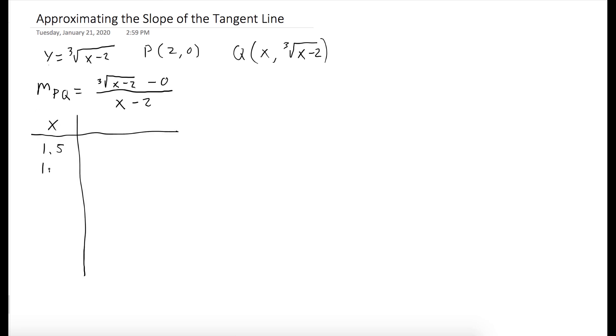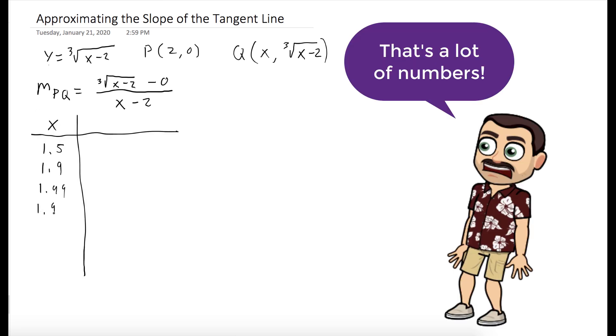So we're going to plug in x values that are close to 2. For instance, 1.5, 1.9, 1.999, 2.001, and so forth. And see what happens to the slope of this secant which connects P and Q.